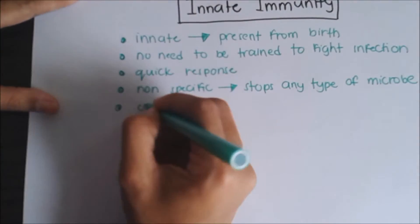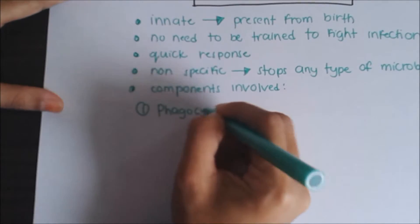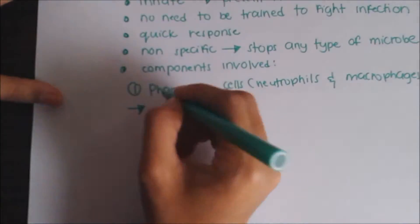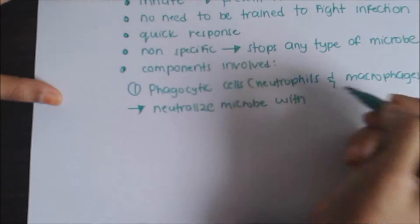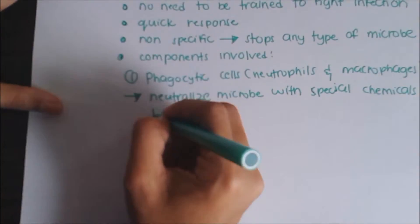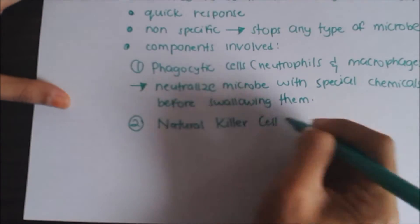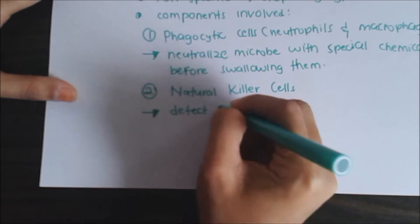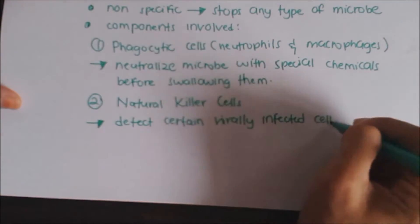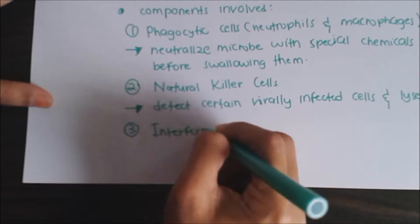The components involved in innate immunity are: first, phagocytic cells, which consist mainly of neutrophils and macrophages — they neutralize microbes with special chemicals before swallowing them. Second, natural killer cells, which detect certain virally-infected cells and lyse them. Third, interferons, which inhibit replication of many viruses.